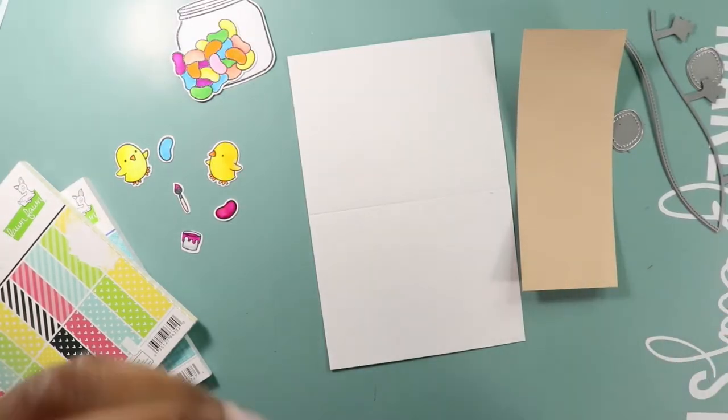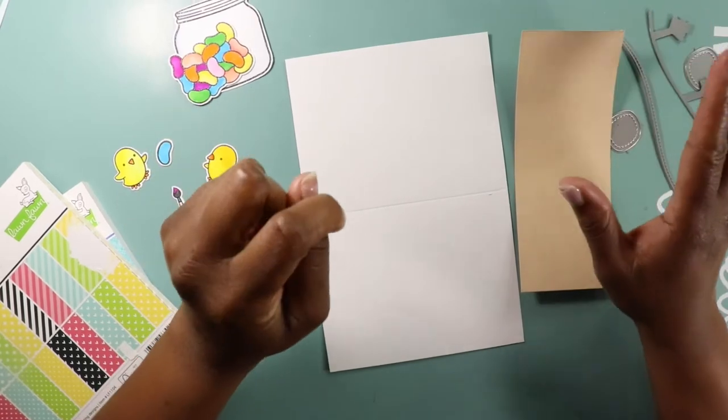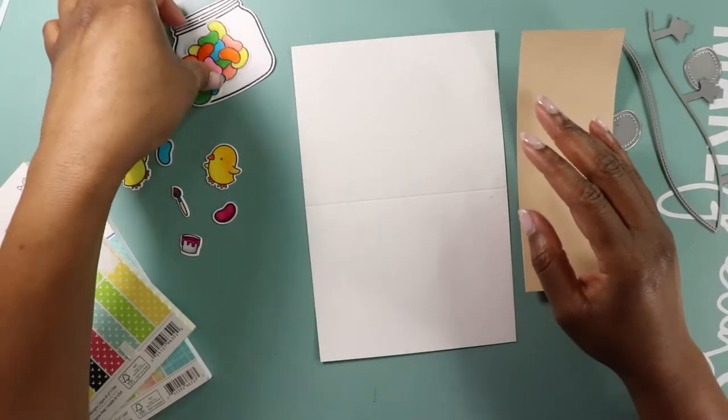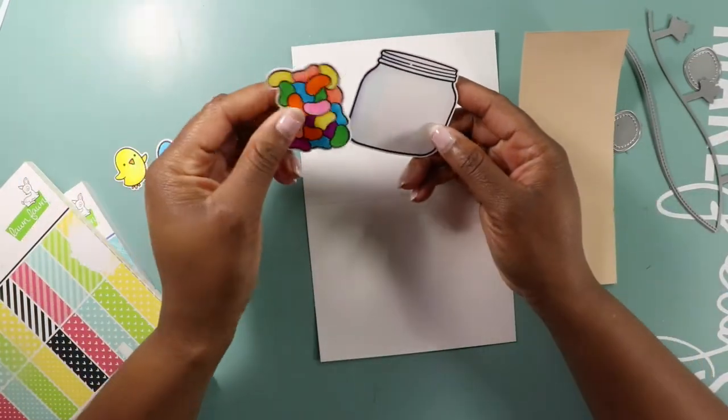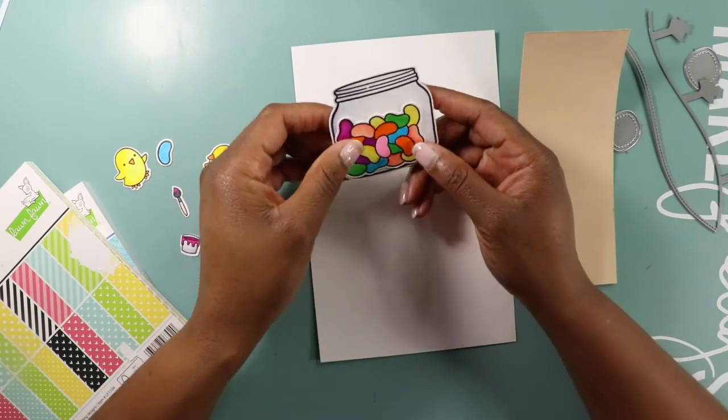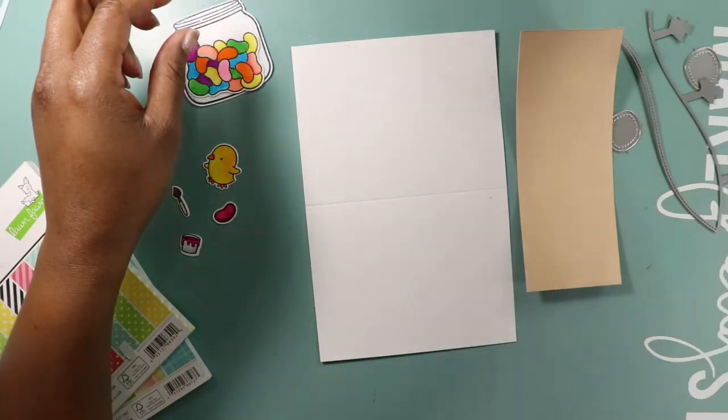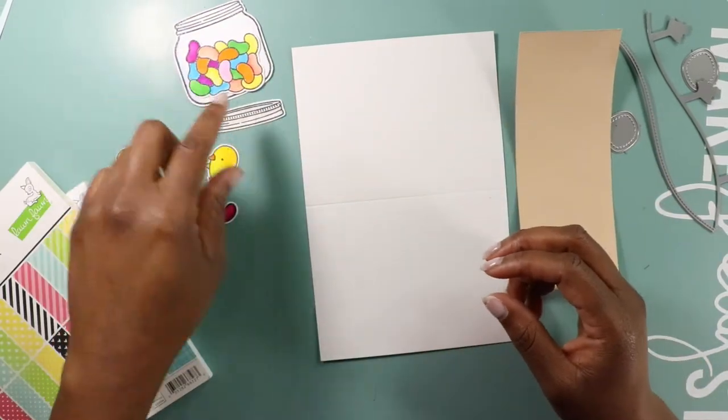Hello my crafty friends, it's Trinae here and we are about to make a little project. We are going to use our little jelly bean stamp set and we have a lid over here. I'm thinking I'm going to color over the lid because it kind of gets lost.